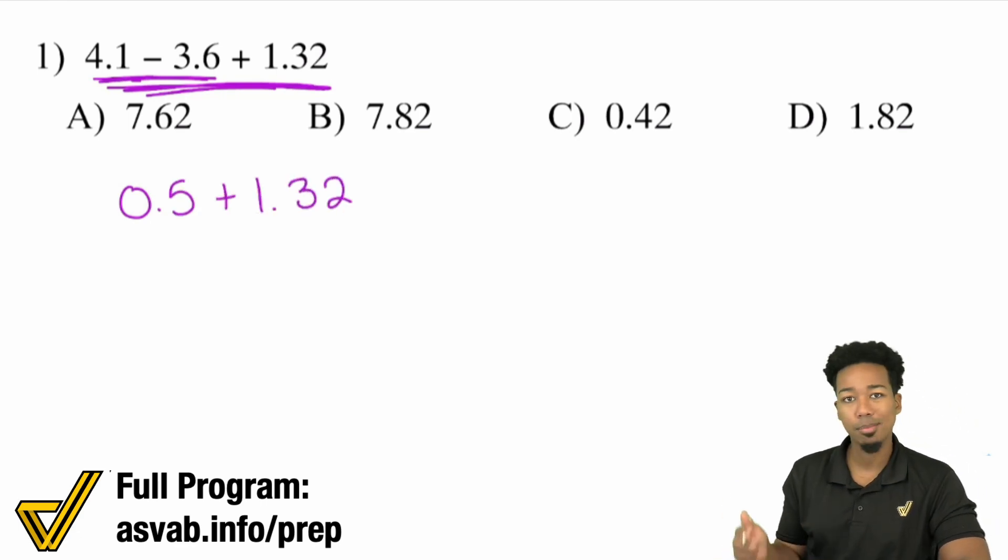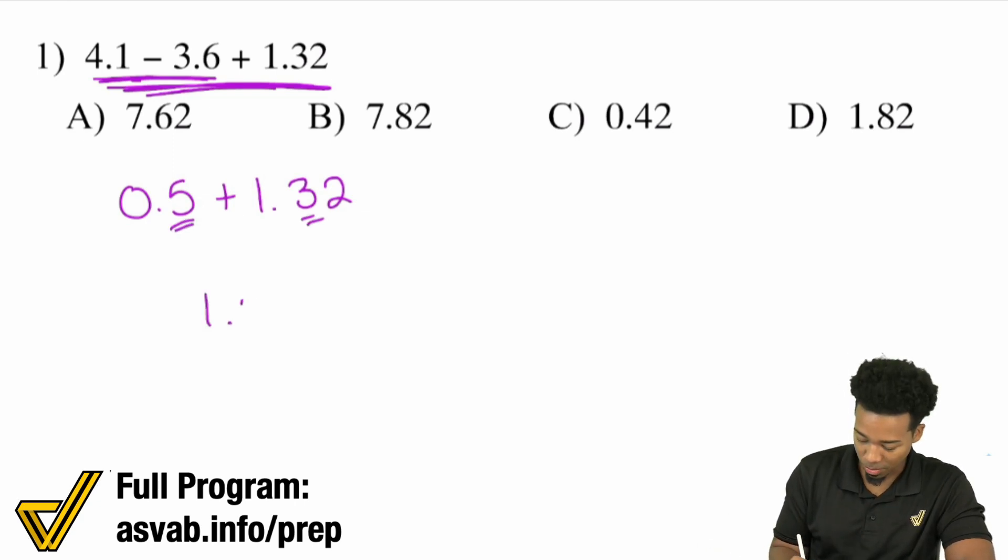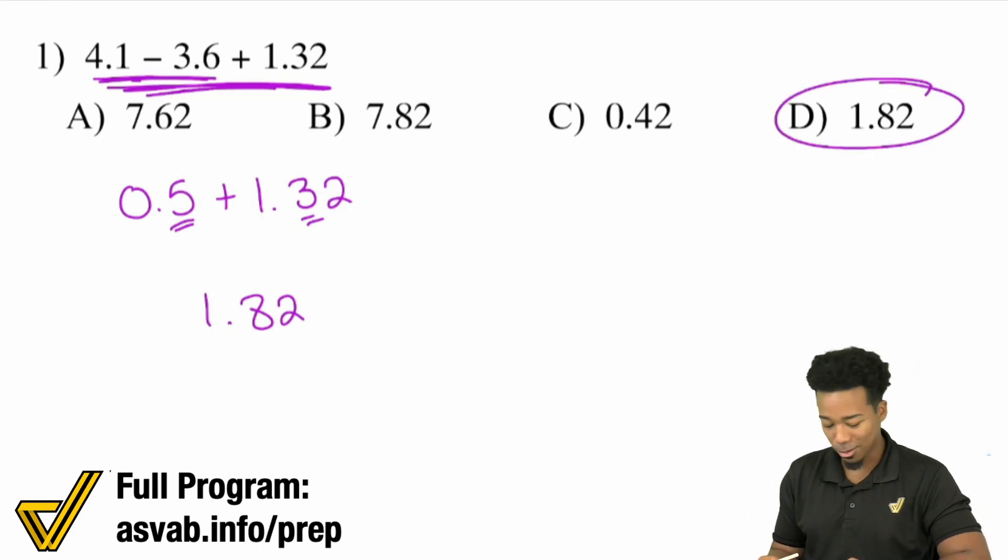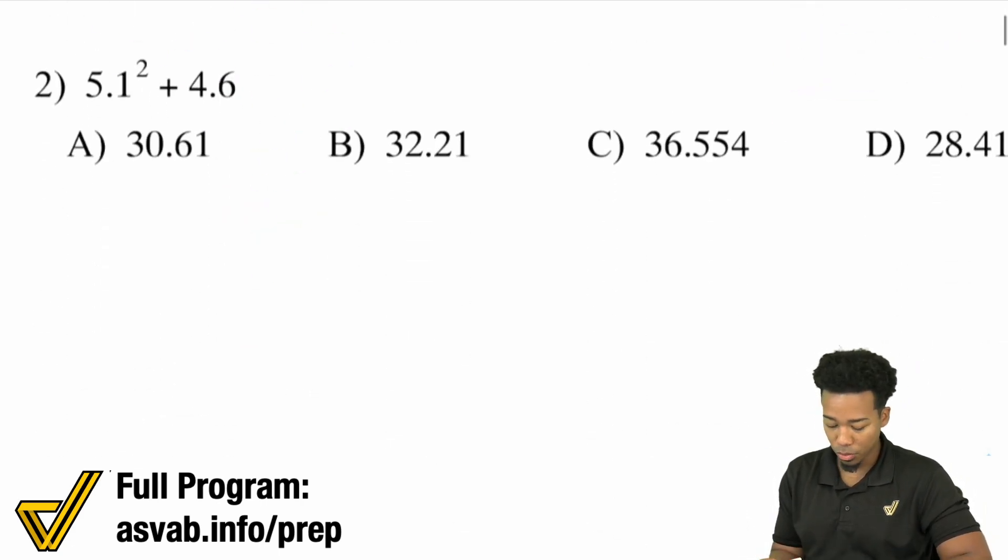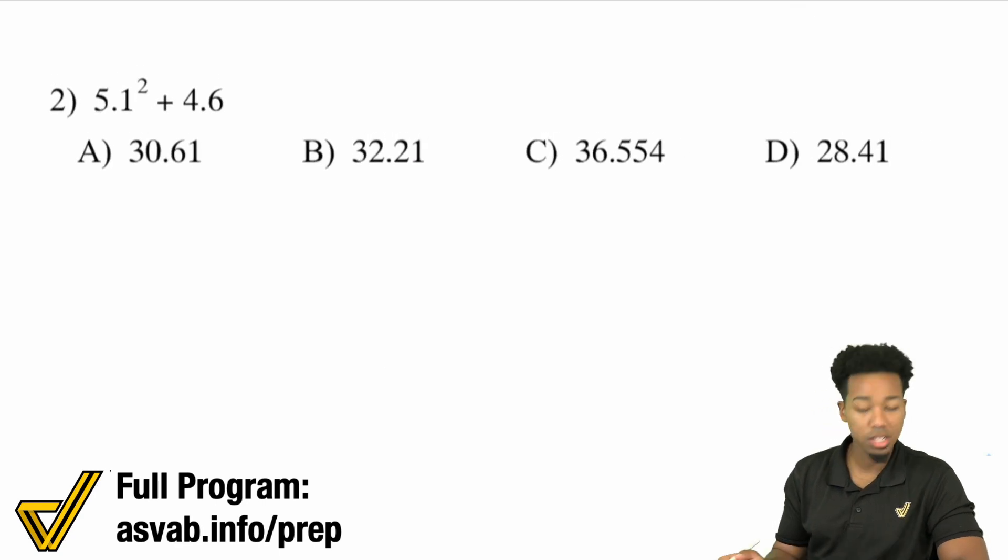4.1 minus 3.6. You can treat that like 41 minus 36, except just put the decimal back where it was. So that's going to be 0.5 plus 1.32. And then from there, just add that 0.5 in. No mental math needed. That's actually pretty straightforward. Again, as long as you understand place value, knowing that the tenth place adds with the tenth place. So that'd be 1.82. You're done and we can move on.